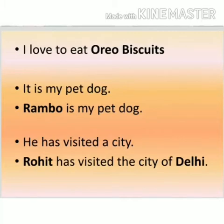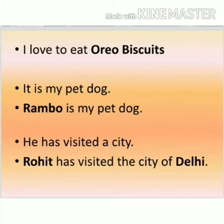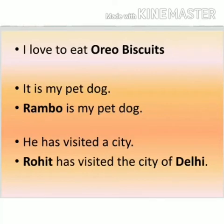Another example: He has visited a city. Now who is he, and where has he visited? If we add special names along with these words, we will have a very clear picture. If I say: Rohit has visited the city of Delhi — now it is clear that there is a boy whose name is Rohit and he has visited the city of Delhi. Rohit starts with a capital letter as it is a person's name, and Delhi also starts with a capital letter as it is the name of a place.